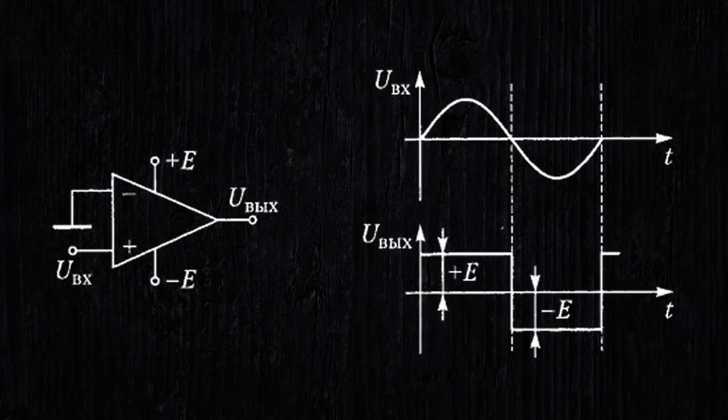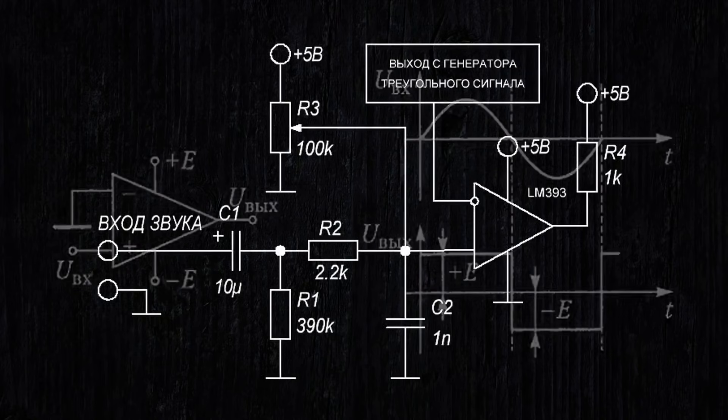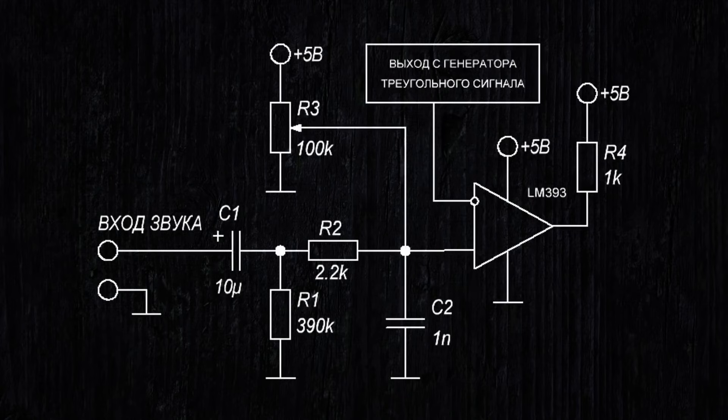For reference, a comparator is a device that compares two analog signals at its inputs. If the signal at the non-inverting input is greater than at the inverting input, a logical 1 appears at the output. If it's less than a logical 0, we should get a PWM signal at the output. We connect according to the following diagram.